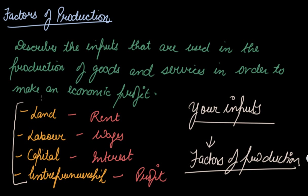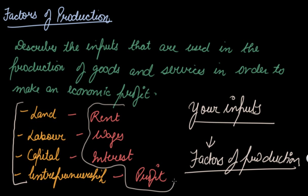The major factors of production are land, labor, capital, and entrepreneur. To land you pay rent, to labor you pay wages, to capital you pay interest, and to entrepreneurship you give a share of your profit. So these are your expenses — these are your inputs.